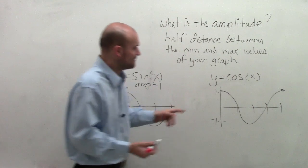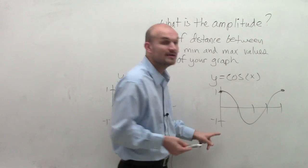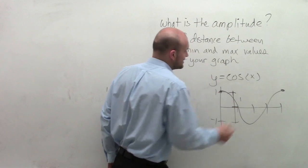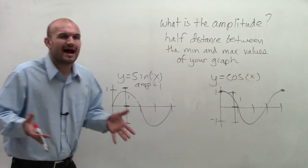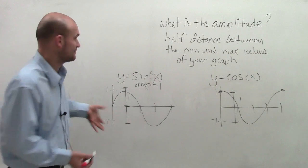And that's the same thing for our max distance of our cosine graph. You can see that the maximum value is 1, the minimum value is negative 1. So therefore, that half distance is, again, going to be 1. So how do we always know what our amplitude is going to be, or how can we determine that for different functions?